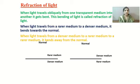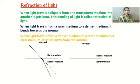When light travels from rarer medium to denser medium, it bends towards the normal. If it would have traveled only in one medium, it would have traveled straight. But when it travels from rarer to denser medium, it bends towards the normal, as shown in the figure.